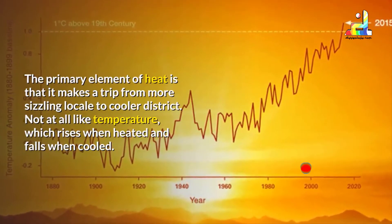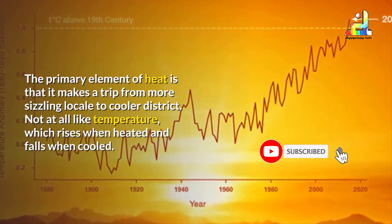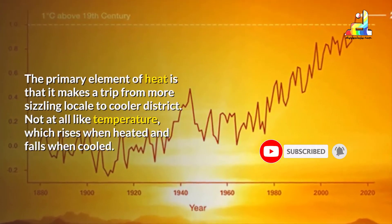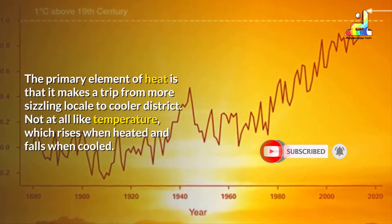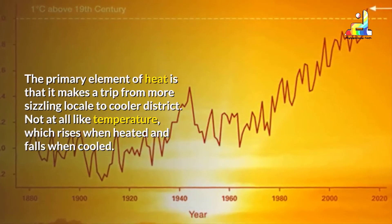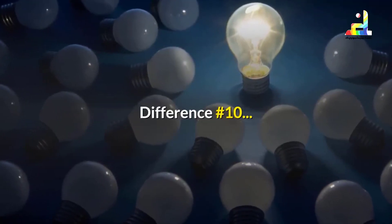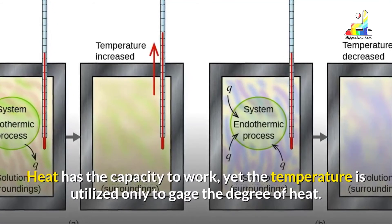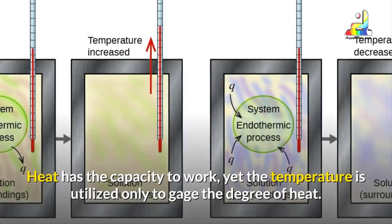Difference number nine: the primary characteristic of heat is that it travels from a hotter region to a cooler region, unlike temperature which rises when heated and falls when cooled. Difference number ten: heat has the capacity to do work, but temperature is used only to gauge the degree of heat.